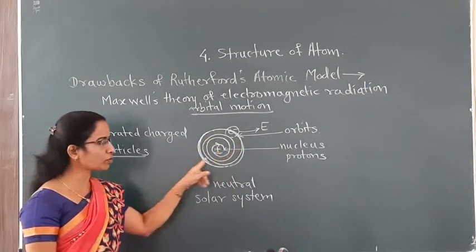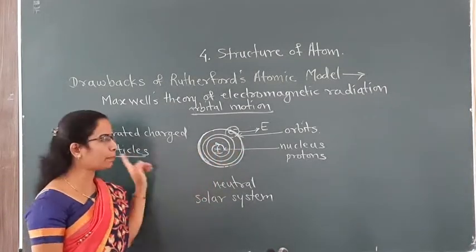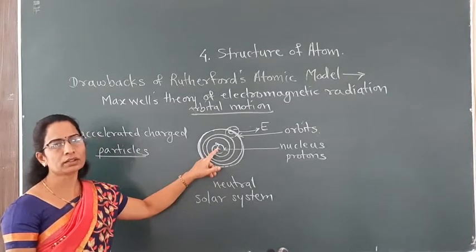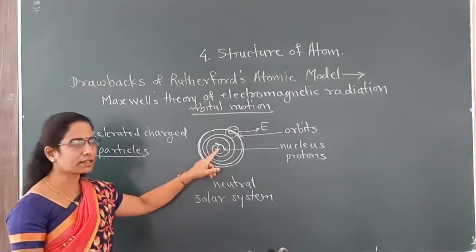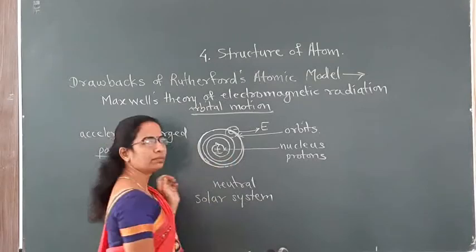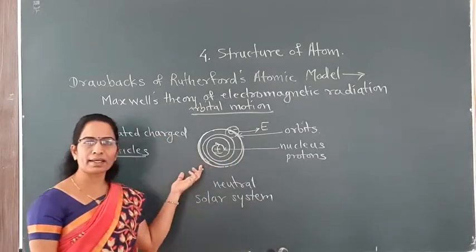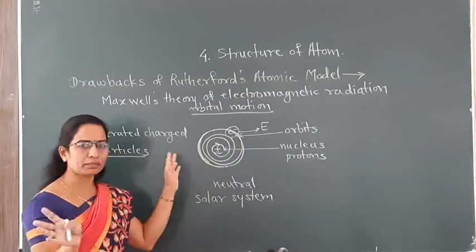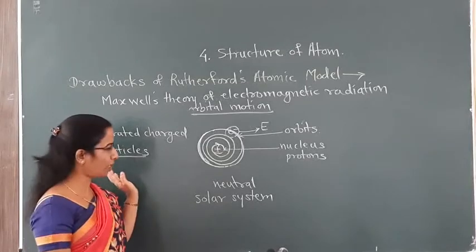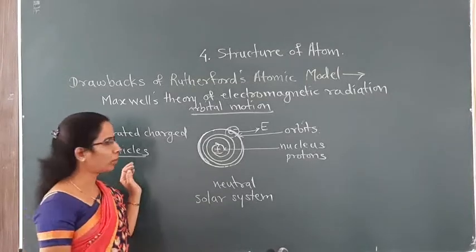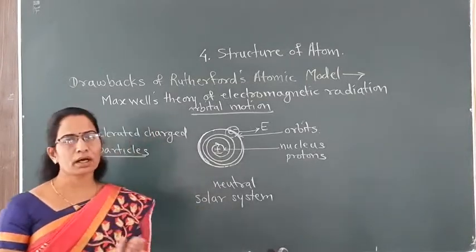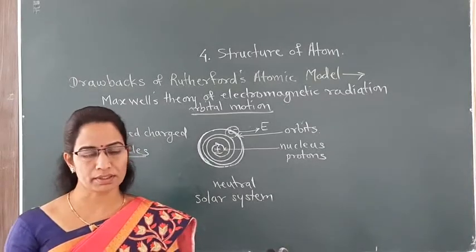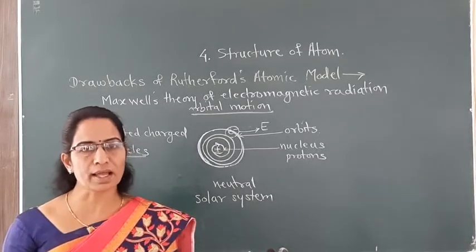Because of this continuous energy emission, the electrons would follow a spiral path and eventually fall into the nucleus. As a result, the atoms would not be stable — they would collapse within a fraction of a second. But in reality, all atoms are stable.